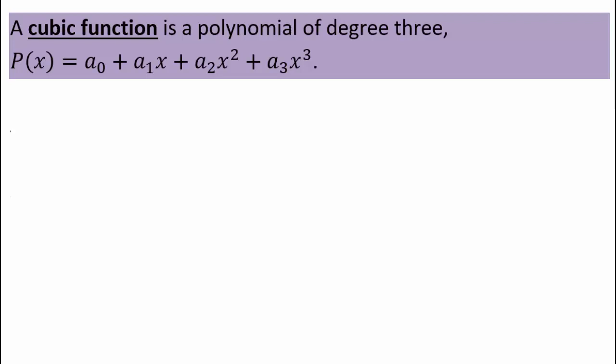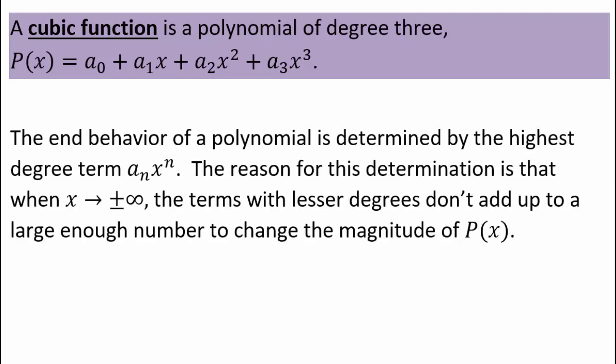In general, if you think about the highest power term of a polynomial function, when you raise really large numbers to, say, x to the power 4, or 5, or n, those terms are so big that they dominate the entire polynomial. So the end behavior of a polynomial function is dominated by its highest degree term, a sub n times x to the power n.